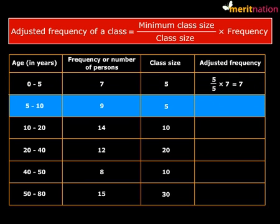Second row, minimum class size 5, this class size 5, frequency 9, and we get our adjusted frequency once again as 9.